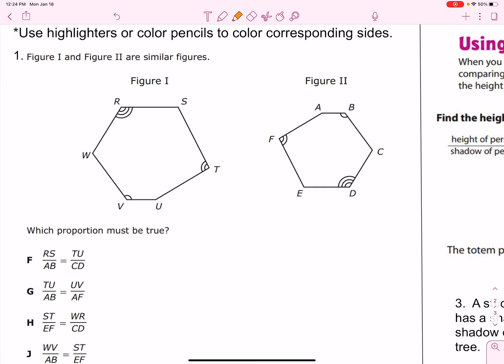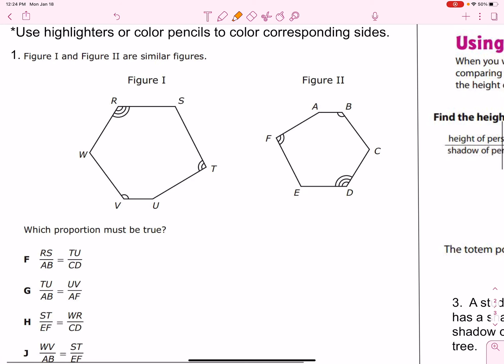I'm looking at this one, two, three, four, five, six-sided figure, so that's a hexagon, compared to a second hexagon, and we want to know which proportion is set up correctly with corresponding sides.